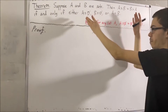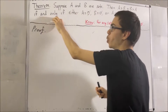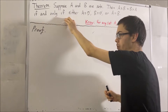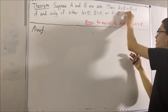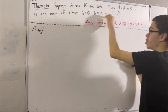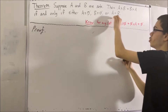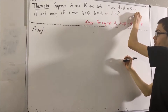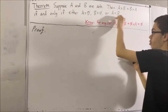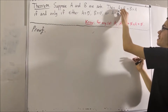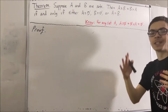To prove this theorem, notice that it contains an if and only if. So, we're going to prove both directions. We're going to start out by proving the converse — that is, if the right-hand condition is true, then A times B equals B times A.